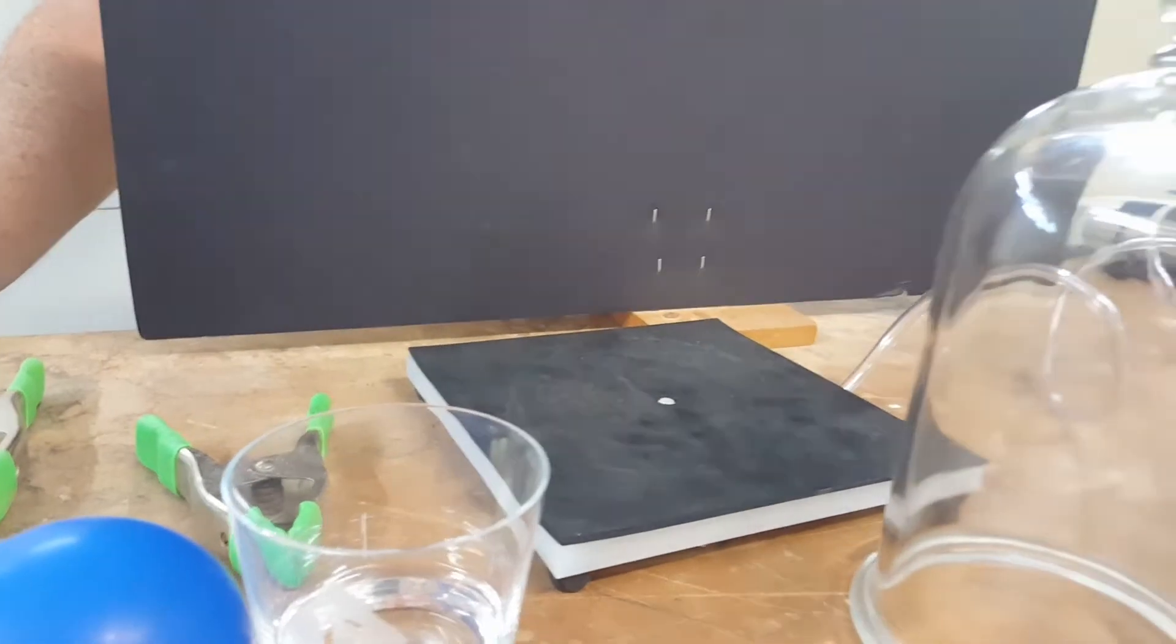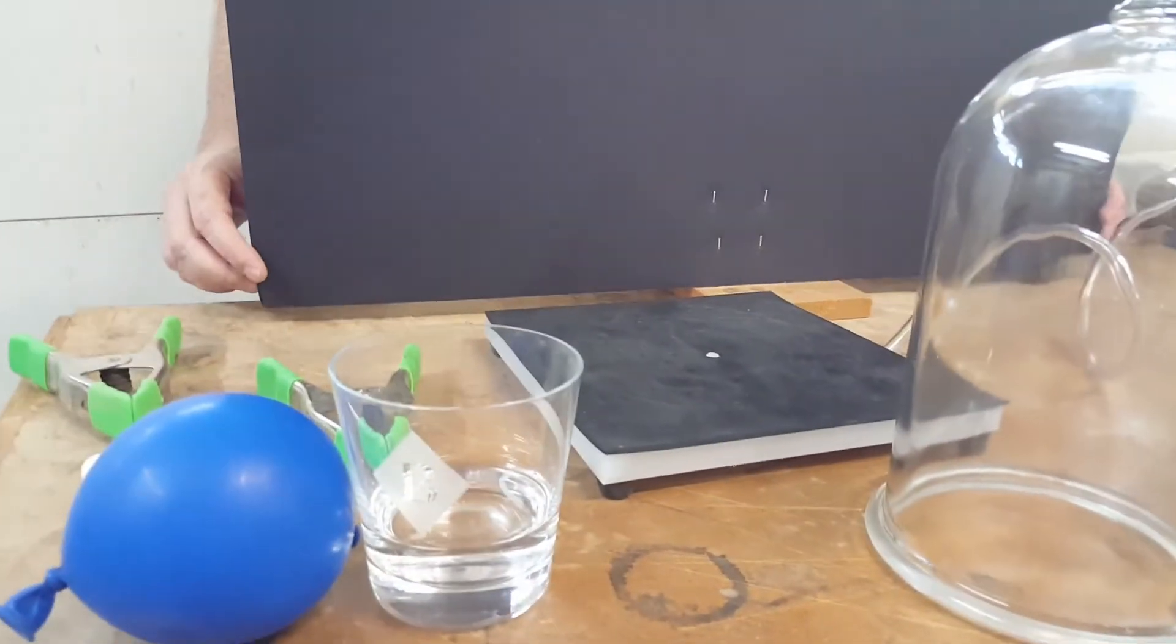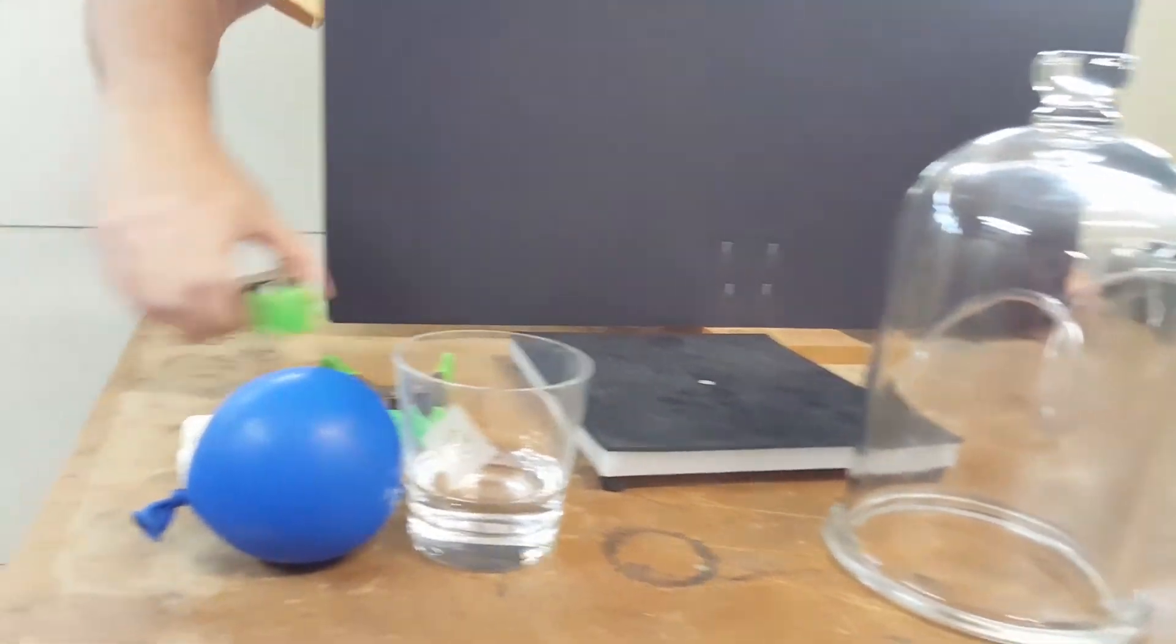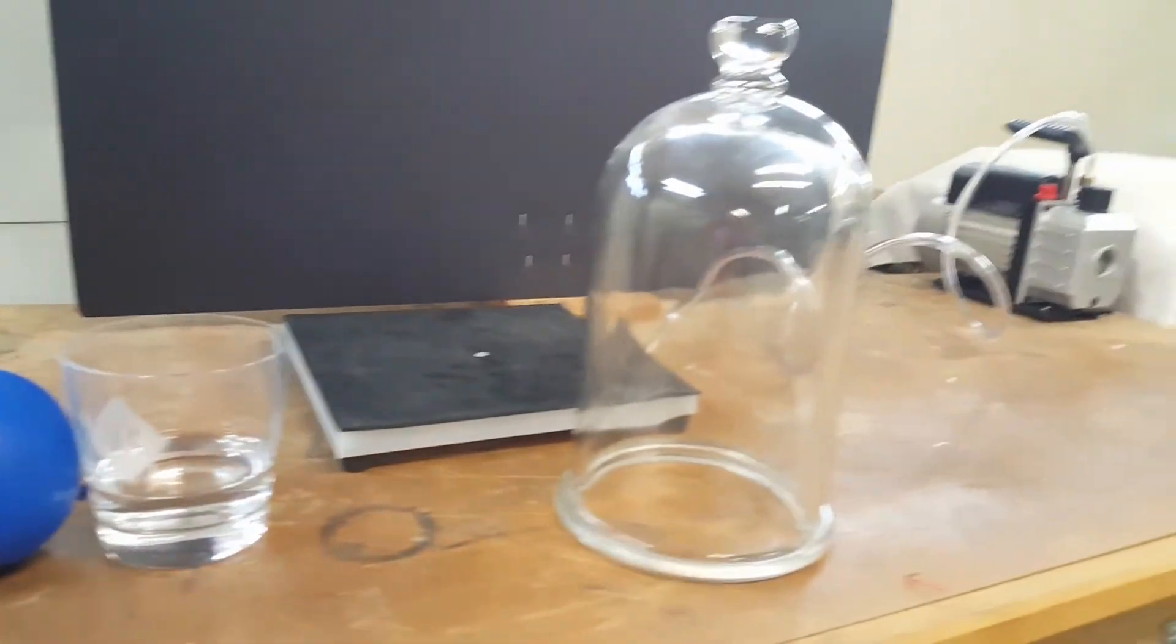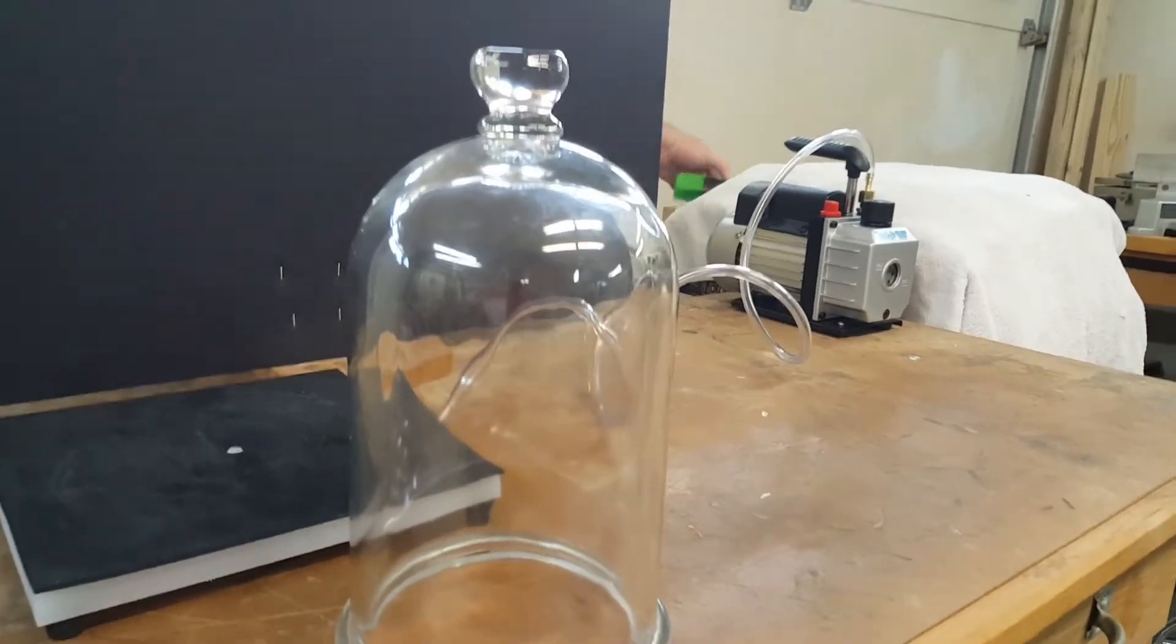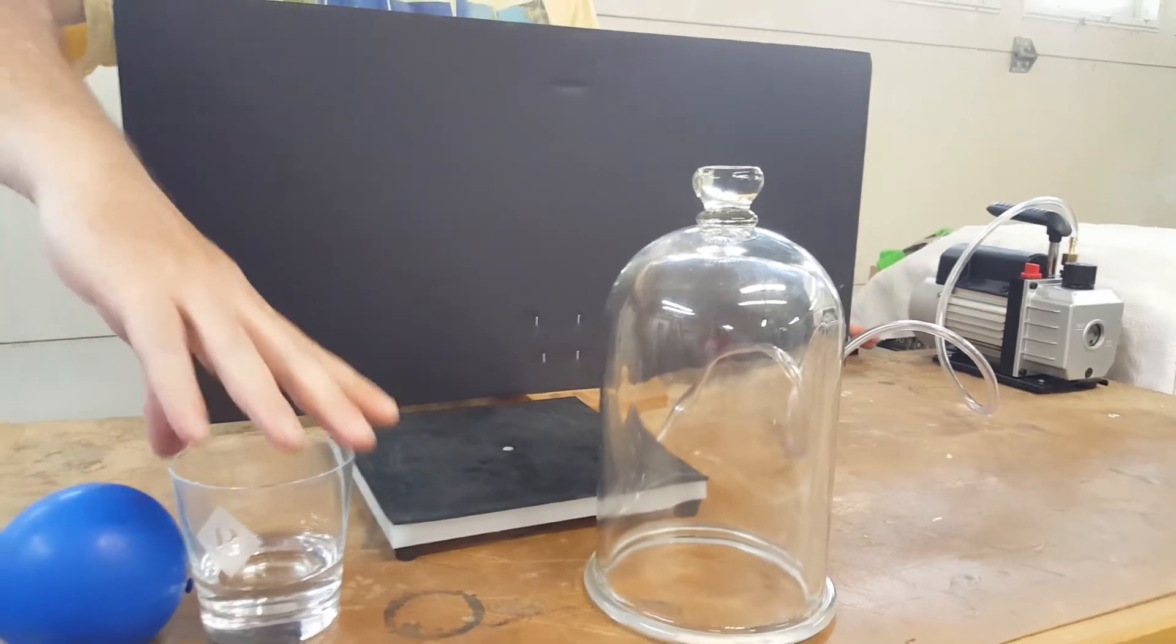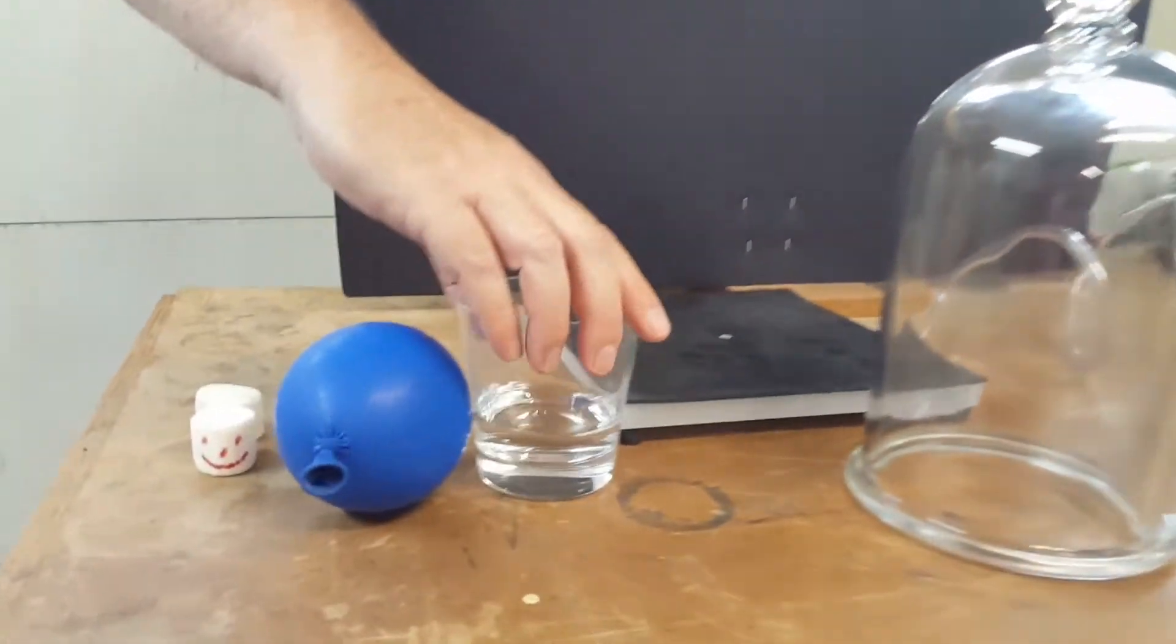We're going to do some experiments in vacuum and see how vacuum affects different things. One of the first experiments we're going to try is what impact does vacuum have on the boiling point of water.